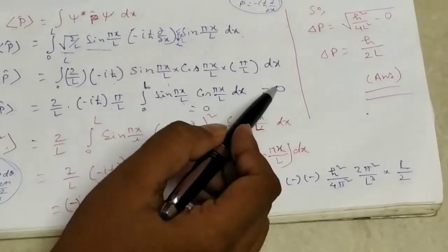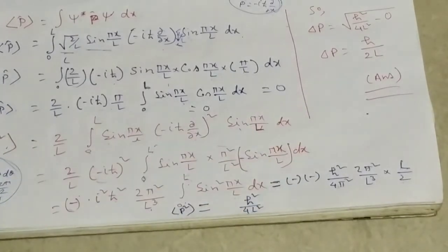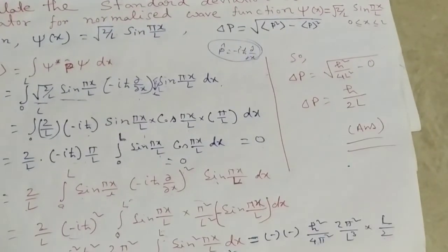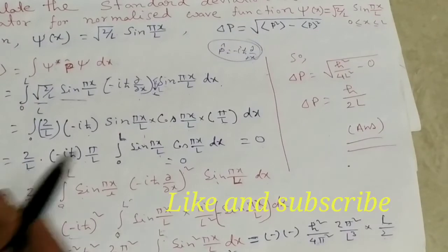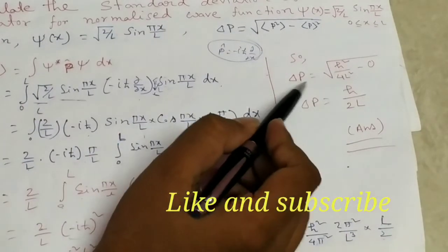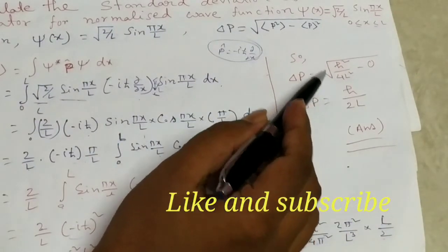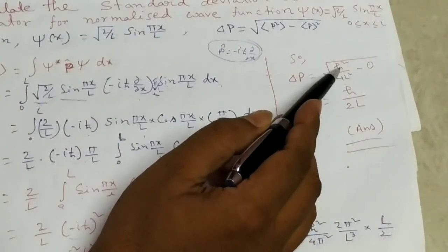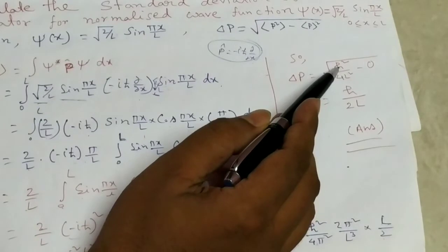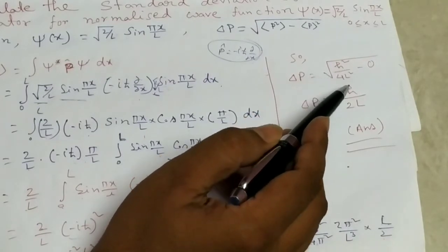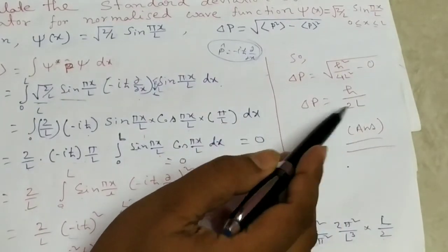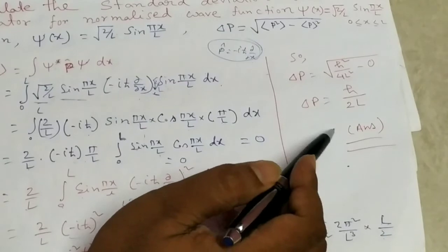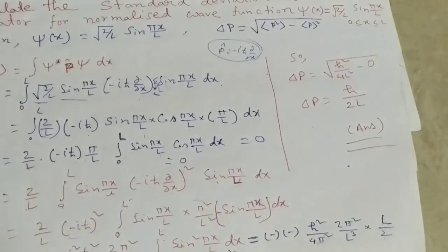Since p-squared average equals h-squared over 4l-squared and p average equals zero, the standard deviation for the momentum operator is delta-p equals the square root of h-squared over 4l-squared minus zero, so delta-p equals h over 2l. This is the answer.